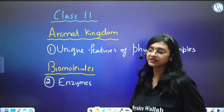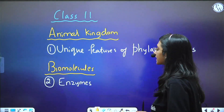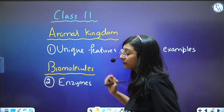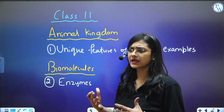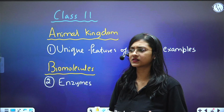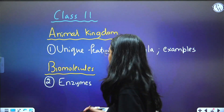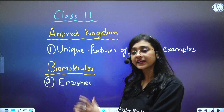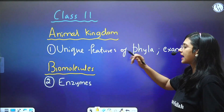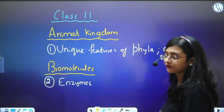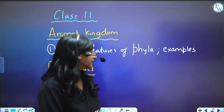The next chapter to consider is Biomolecules of class 11. From this chapter, enzymes are very important — it might be about inhibitors, competitive inhibition, and such concepts. Similarly in Animal Kingdom, you also need to study examples with their scientific names.